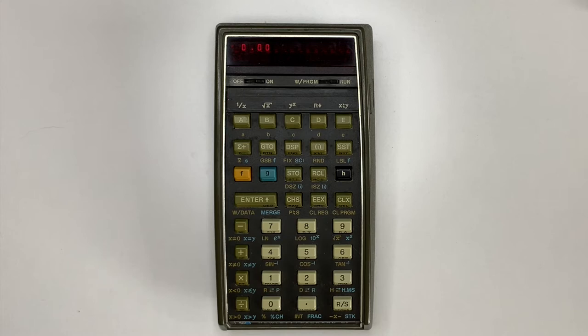The HP 67 programmable scientific calculator included 224 merged program steps and 26 registers and was released in 1976 along with the desktop version, the HP 97.